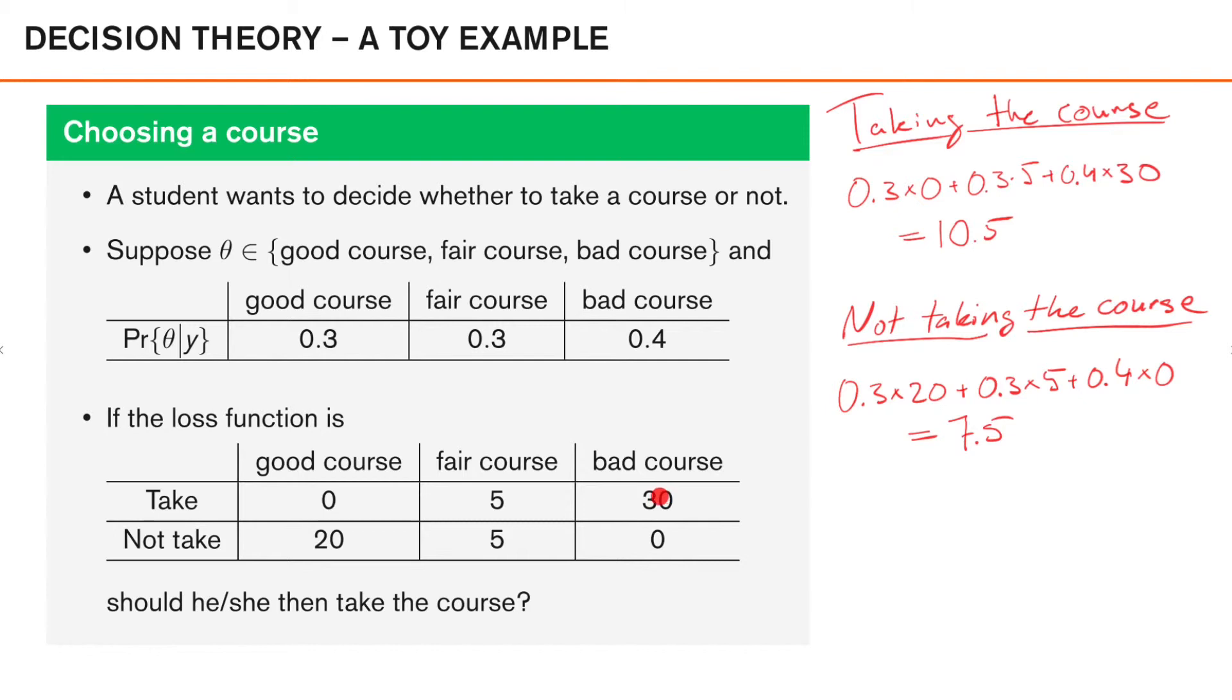So we have now computed the expected loss for the two possible decisions. If the student chooses to attend the course, then we get an expected loss of 10.5. On the other hand, if the student decides not to take the course, we get an expected loss that sums up to 7.5. So the conclusion here is that the student should not attend this course.